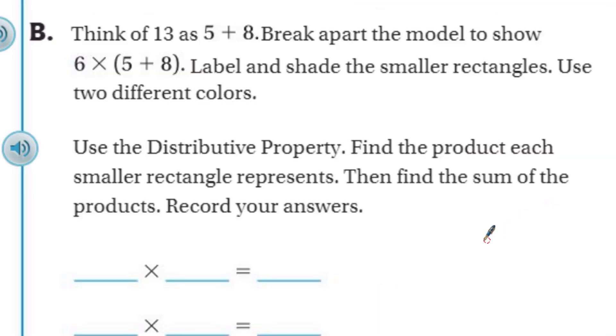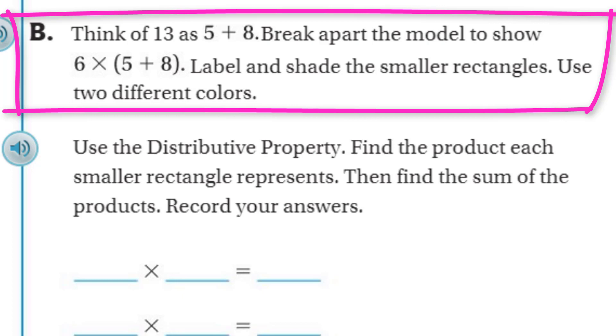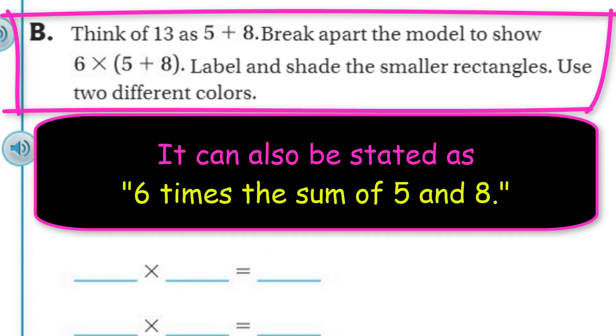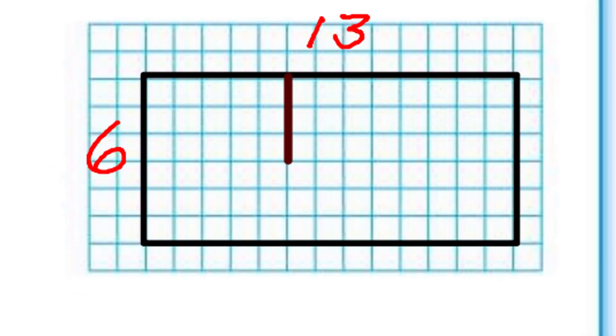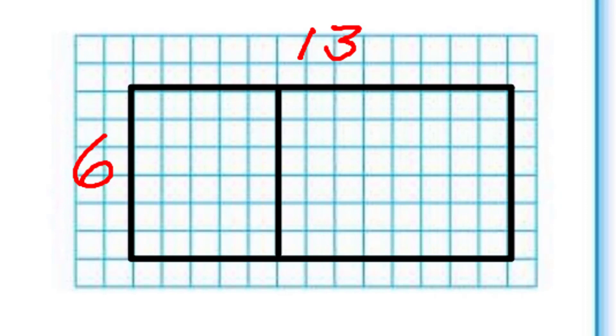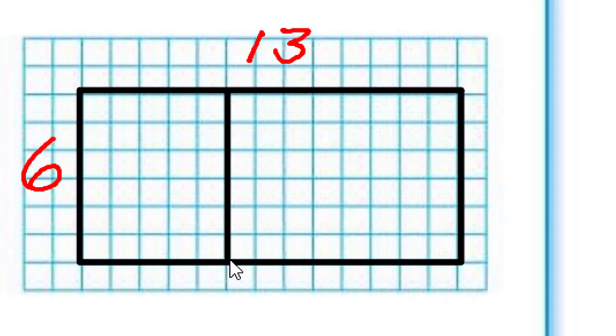But it says in B, think of 13 as 5 plus 8. So we're going to just think of 13 as 5 plus 8. We can break apart the model to show 6 times (5 + 8). And it says label and shade the smaller rectangles. Use two different colors. So it did say 5 plus 8. So what we need to do is we just need to count over 5. 1, 2, 3, 4, 5.